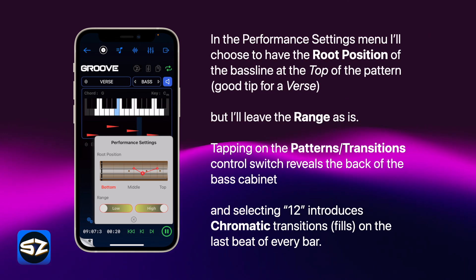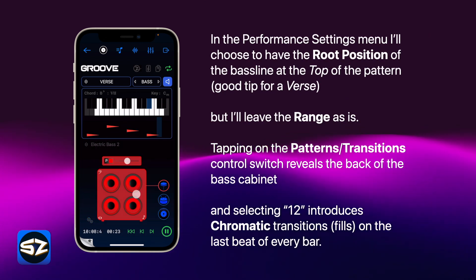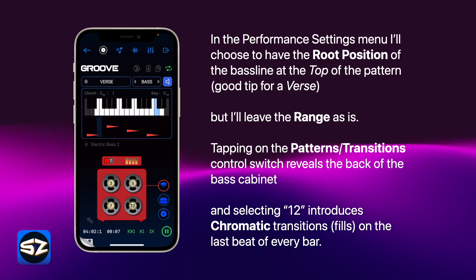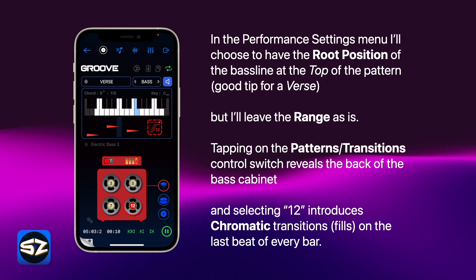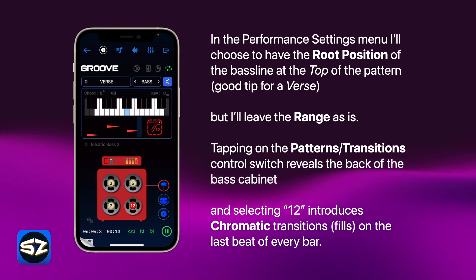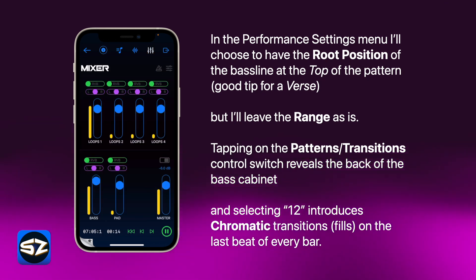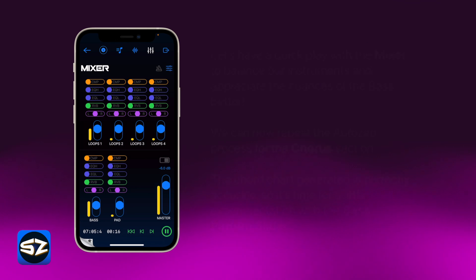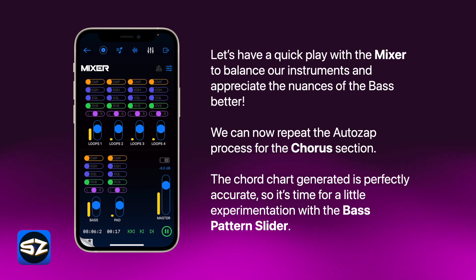In the performance settings menu, I'll choose to have the root position of the bass line at the top of the pattern, but I'll leave the range as it is. Tapping on the patterns transition control switch reveals the back of the bass cabinet, and selecting 12 introduces chromatic transitions on the last beat of every bar. Let's have a quick play with the mixer to balance our instruments and appreciate the bass better.